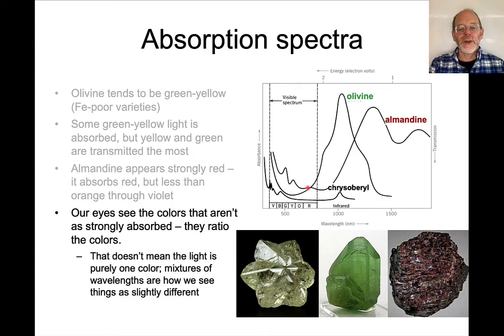Then if we look at a mineral like chrysoberyl, here's the spectrum for chrysoberyl. Chrysoberyl can have slight color, but it tends to transmit pretty uniformly through much of the spectrum. And so typically chrysoberyls don't have very much color. If they do, they tend to be in the yellow-orange part of the spectrum.